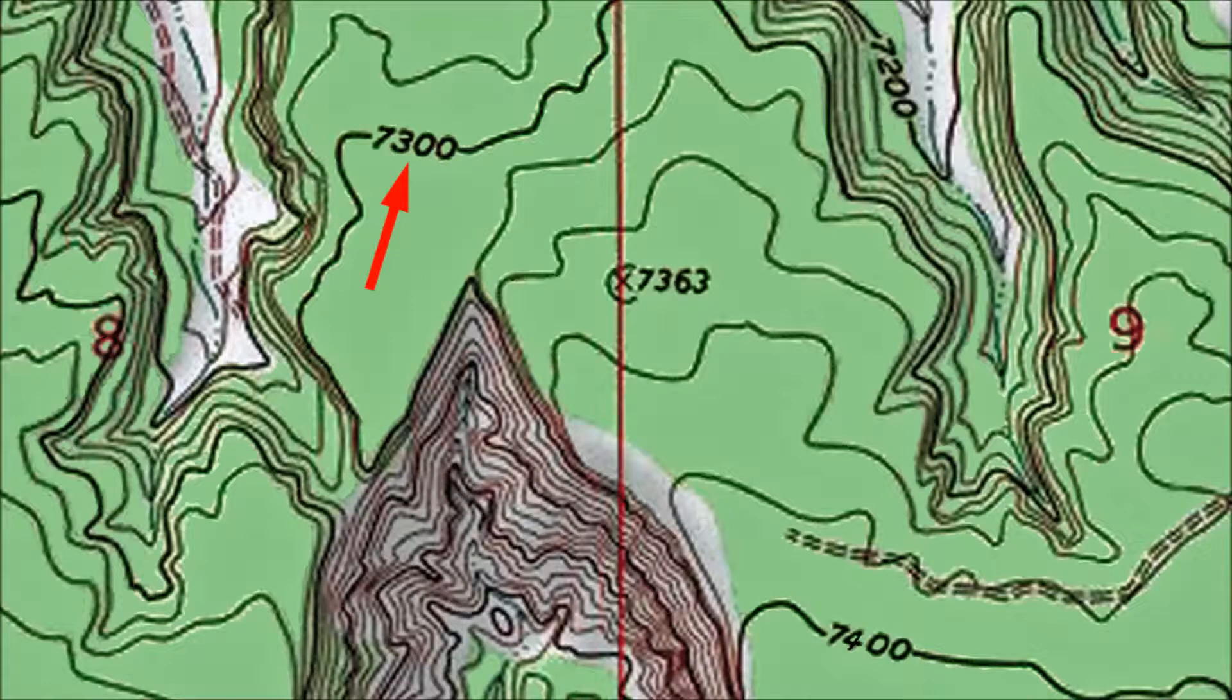Each contour line on a topo map represents an elevation or vertical distance from sea level. You probably picked up on this already, but some contour lines include an elevation value. For example, if you're standing somewhere along the contour line indicated by the red arrow, your elevation is 7,300 feet.